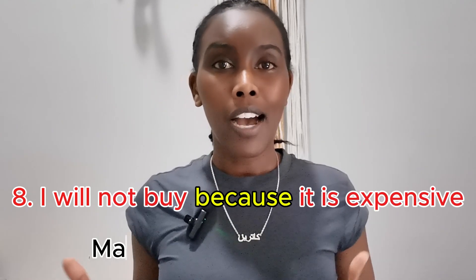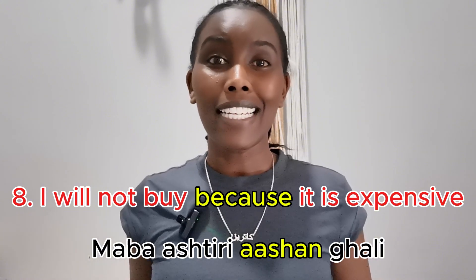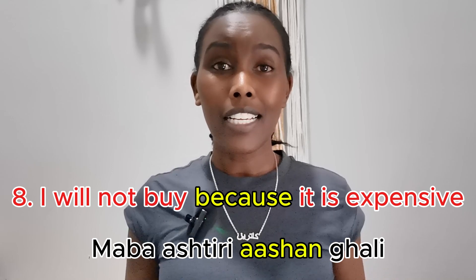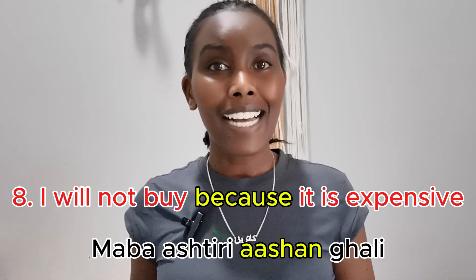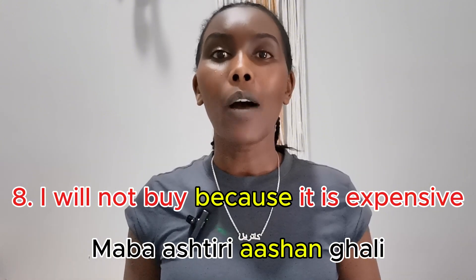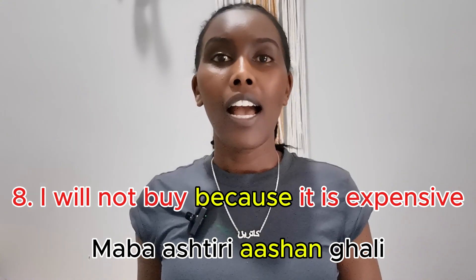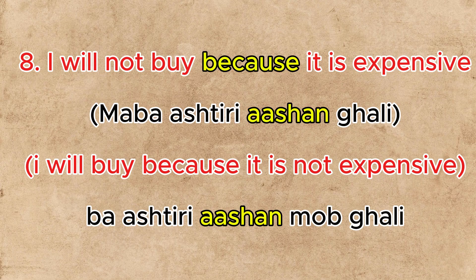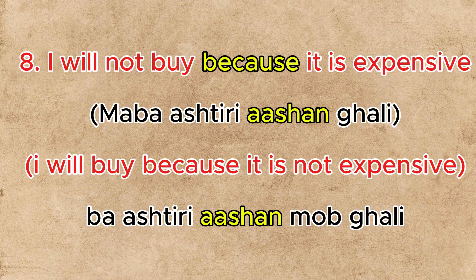Sentence eight: 'I will not buy because it's expensive.' In Arabic: 'Maba ashtri ashan gali.' 'Ashtri' means 'buy,' and 'gali' means expensive — similar to Swahili. To say 'I will buy': 'Ba ashtri.' Reversed sentence: 'Ba ashtri ashan mab gali' — I will buy because it is not expensive.